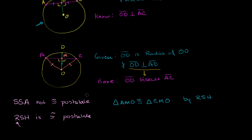Since the triangles are congruent, their corresponding sides must be congruent. AM is a corresponding side to MC, so AM must be equal to MC. Therefore, OD is bisecting AC. So we've established what we needed to prove.